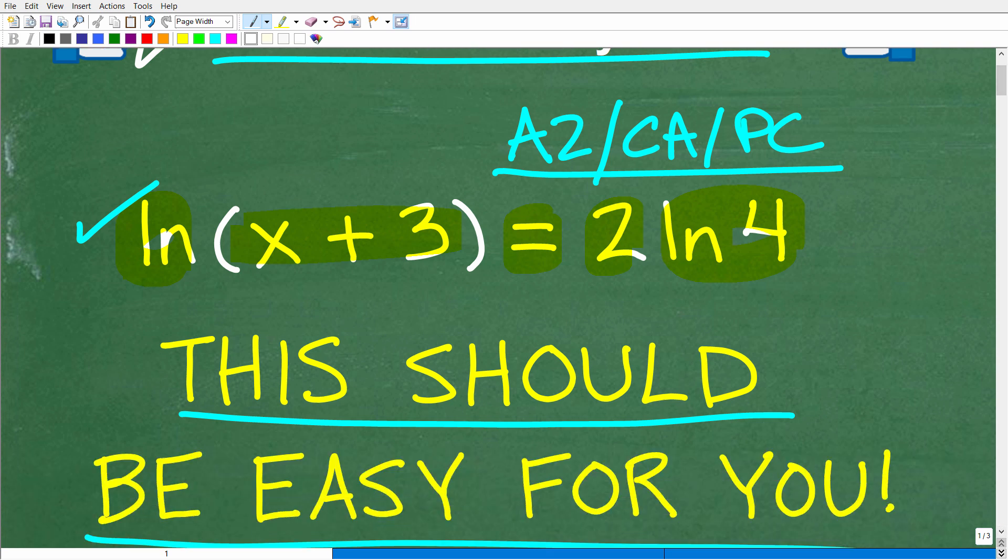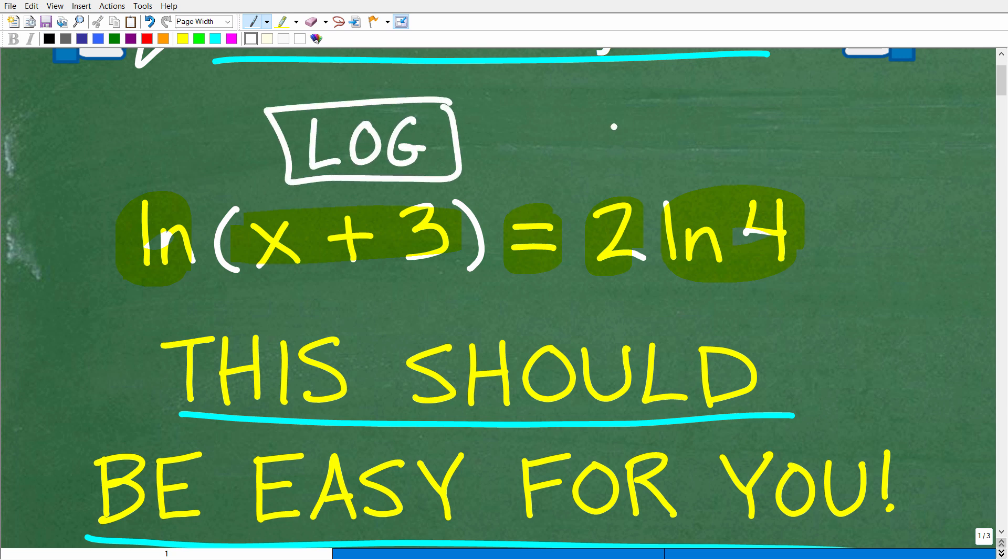Pretty straightforward. We have ln(x + 3) = 2ln4. If you've never heard of ln, if you have a scientific calculator handy, there's two buttons on your calculator: one is log, and the other one is ln. Both of these functions have to deal with logarithms, which is a huge topic in algebra. Let's take a look at the answer to this equation.